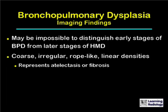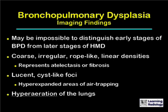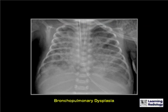There are usually coarse, irregular, rope-like linear densities in both lungs representing atelectasis or fibrosis. Intermixed with these are areas of lucency — cyst-like foci representing hyperexpanded areas of air trapping. Most of the time there is hyperaeration of the lungs in bronchopulmonary dysplasia.